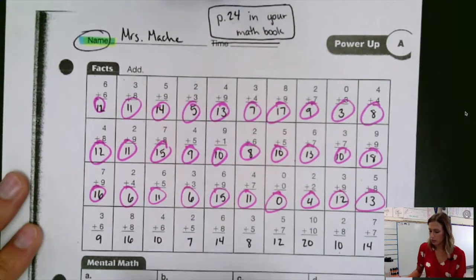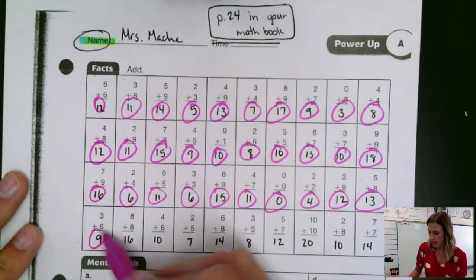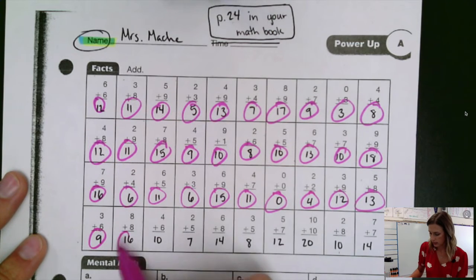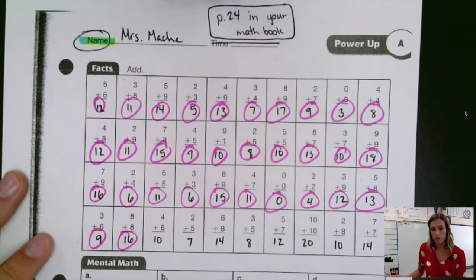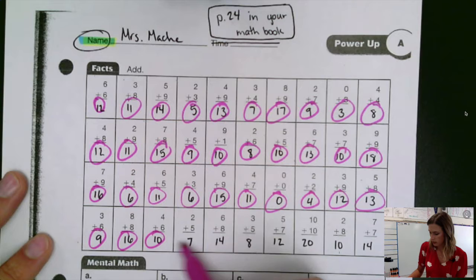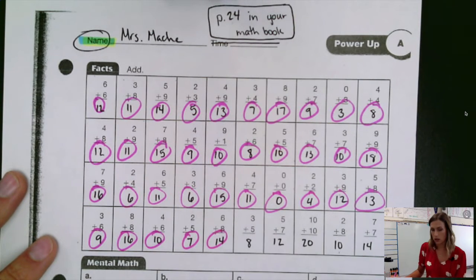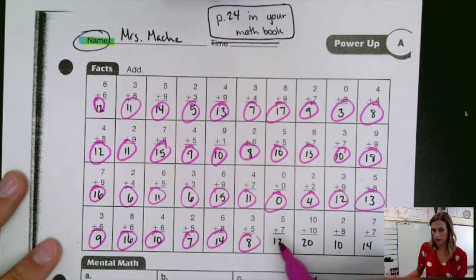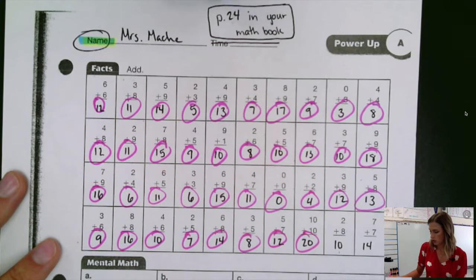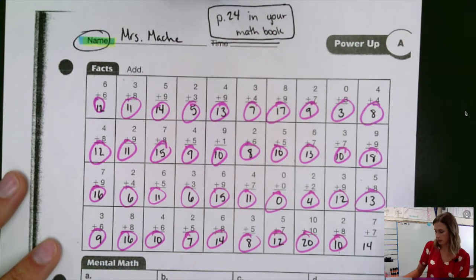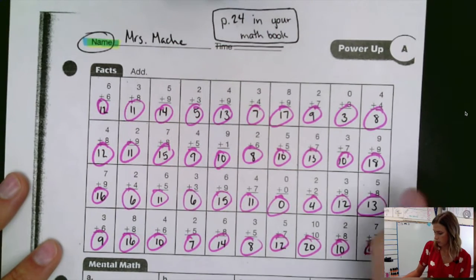Last row. Three plus six is nine. Eight plus eight is sixteen. Four plus six is ten. Two plus five is seven. Six plus eight is fourteen. Three plus five is eight. Five plus seven is twelve. Ten plus ten is twenty. Two plus eight is ten. Seven plus seven is fourteen.